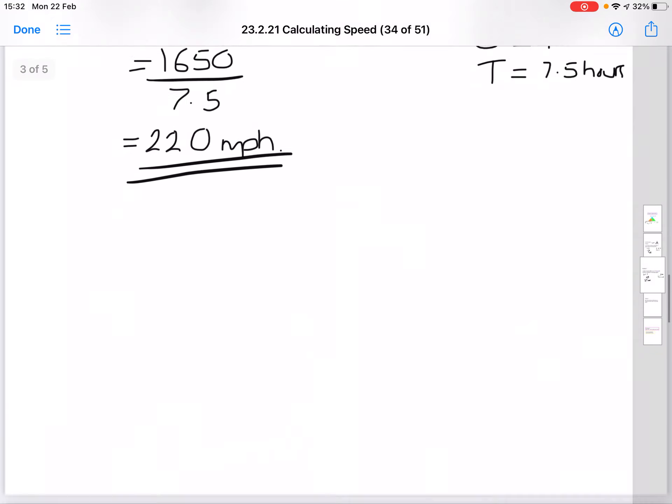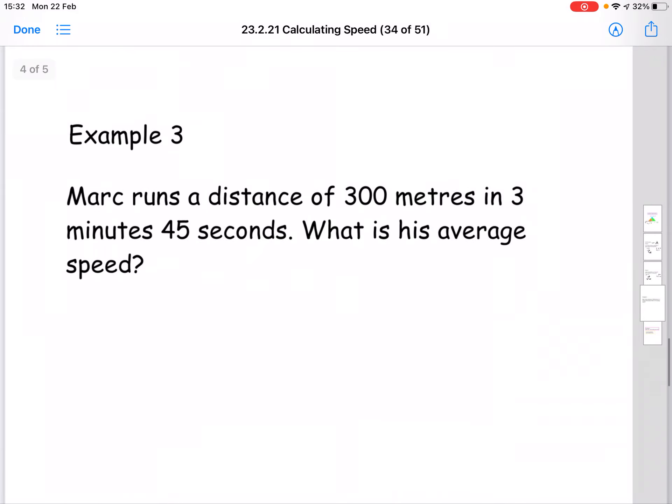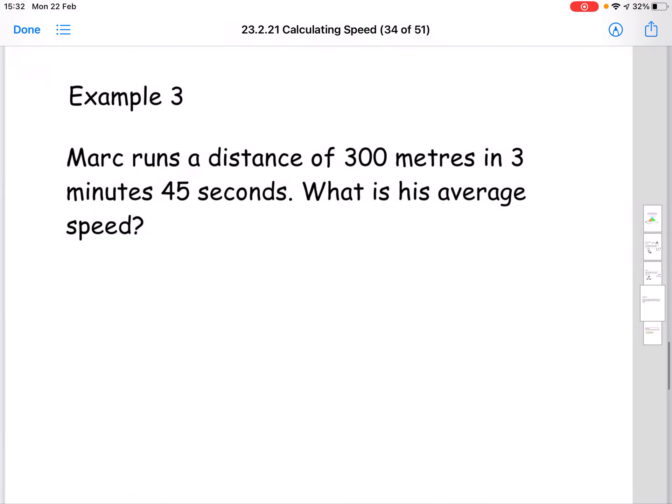Okay, one more example here, which is again, a sort of yellow level example, maybe even yellow purple. So here we have Marc runs a distance of 300 meters in three minutes, 45 seconds. What is his average speed?